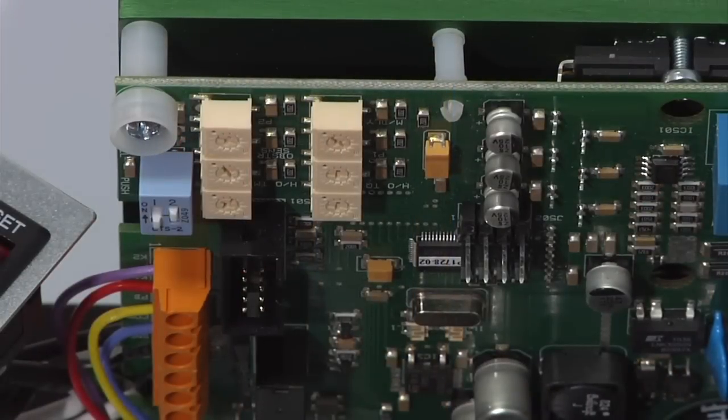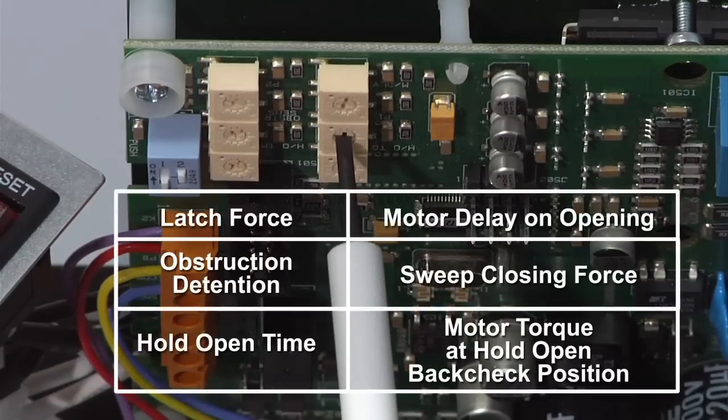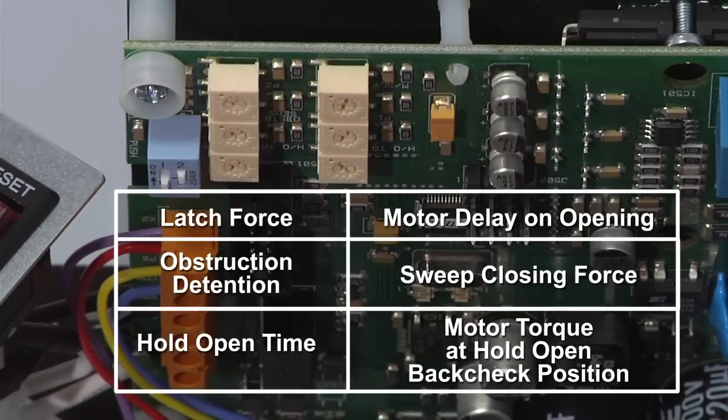To make adjustments on the inverter control board, first determine which function adjustment is needed. Select the pot to make the adjustment. Turn the pot clockwise to increase, counterclockwise to decrease.